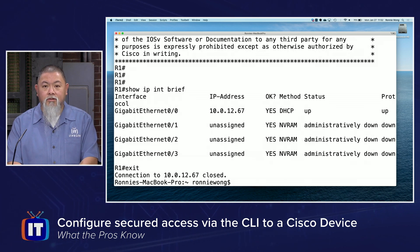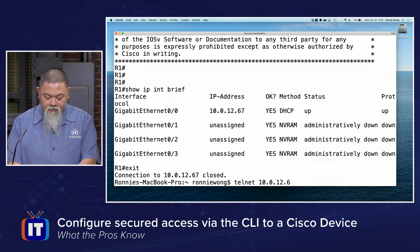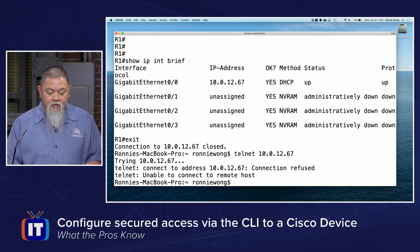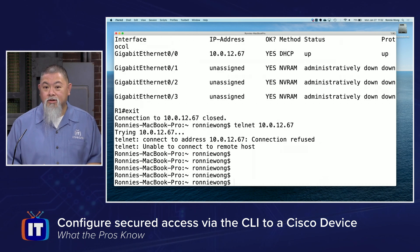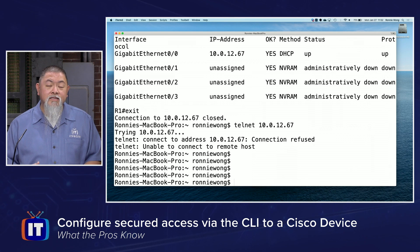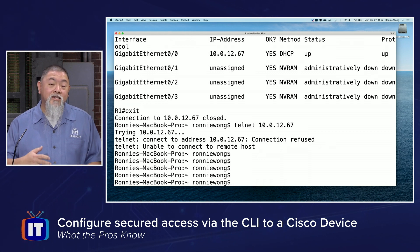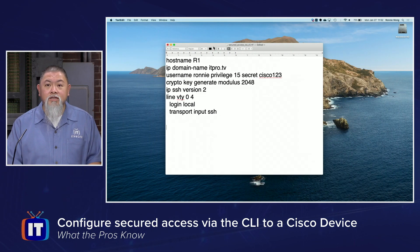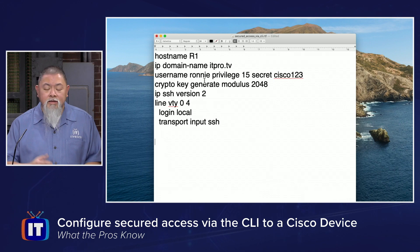Let's test it one more time. What if I simply said telnet to 10.0.12.67? Notice it tells me I am unable to connect to the remote host. So being able to set this up is something that pros use when they configure routers at initial setup so they can do it comfortably from their desk. Here are the actual commands we used through this entire demonstration. Remember you can learn more about this at ITPro.TV. I'm Ronnie Wong, and now you know what the pros know.